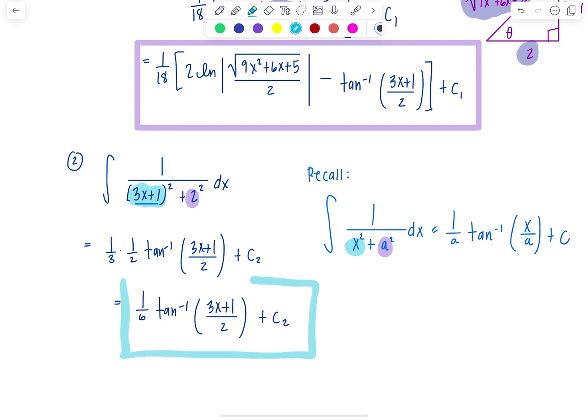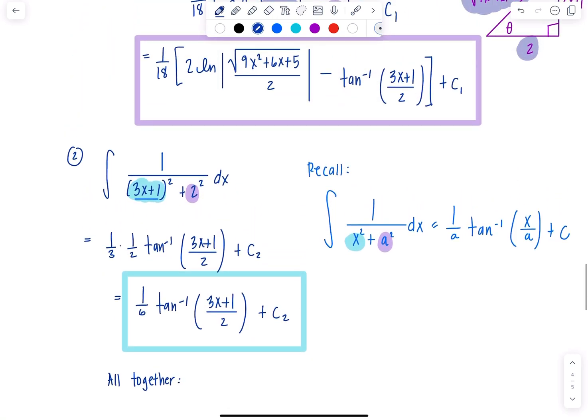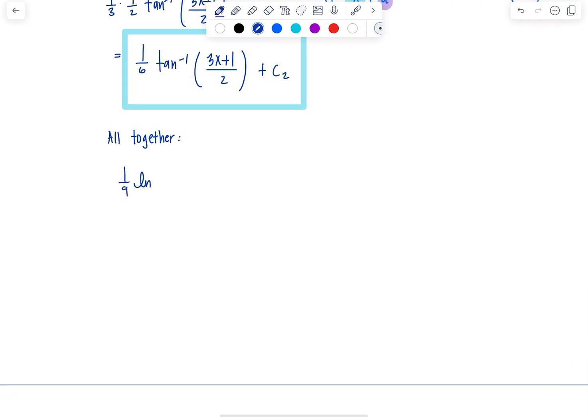Let's put everything all together. I'm going to distribute the 1 18th while I put everything together. It's going to be 1 ninth ln absolute value square root 9x squared plus 6x plus 5 over 2 minus, also distributing the 1 18th to tan inverse of 3x plus 1 over 2 plus, here's integral number 2, 1 sixth tan inverse 3x plus 1 over 2, plus c1 plus c2.